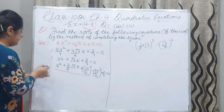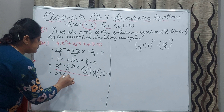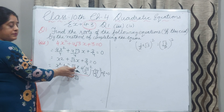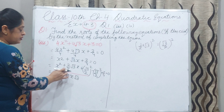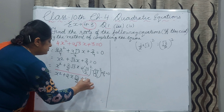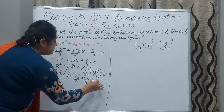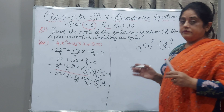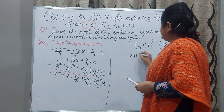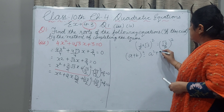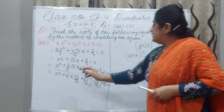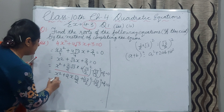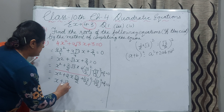Now you see these terms. You write x here, then 2, then x, then in the numerator √3 and denominator 2, plus (√3/2)², minus (√3/2)², plus 3/4 = 0. Now recall a formula from ninth class: (a + b)² = a² + 2ab + b². This is a², this is b², 2ab means you can write it as (x + √3/2)².